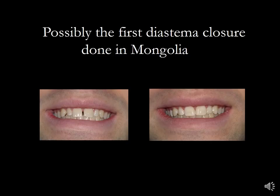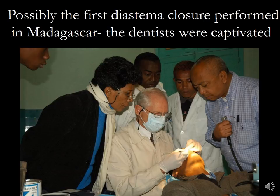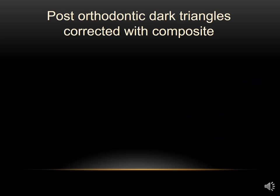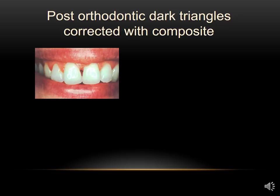When I was in Madagascar, we did some demonstrations on diastema closures, and the dentists had not seen this before — you could tell they were very intently watching. This next case was treated orthodontically, and instead of moving the teeth bodily together, they were tipped. In the tipping, it created a dark triangle, which can easily be corrected with direct composite.